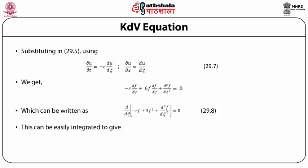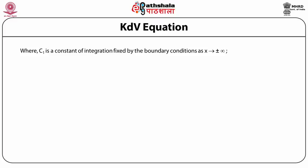This integrates to give: −cf + 3f² + d²f/dξ² = C₁, where C₁ is a constant of integration fixed by boundary conditions as x → ±∞. Since f(ξ) → 0, df/dξ → 0, and d²f/dξ² → 0 as x → ±∞, we conclude that C₁ = 0.